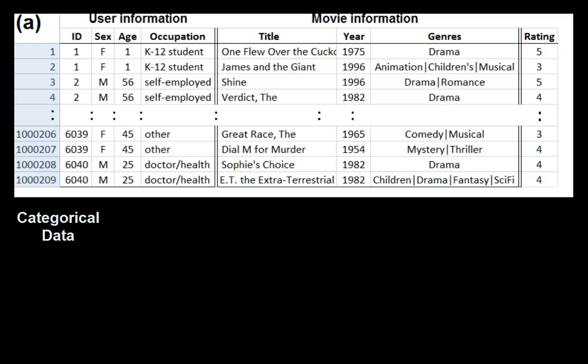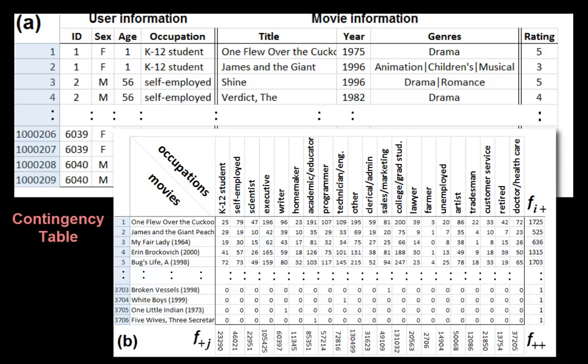Categorical data appear very often in data tables collected in scientific and business domains. A two-way contingency table summarizes the relation between two categorical variables in such data tables.